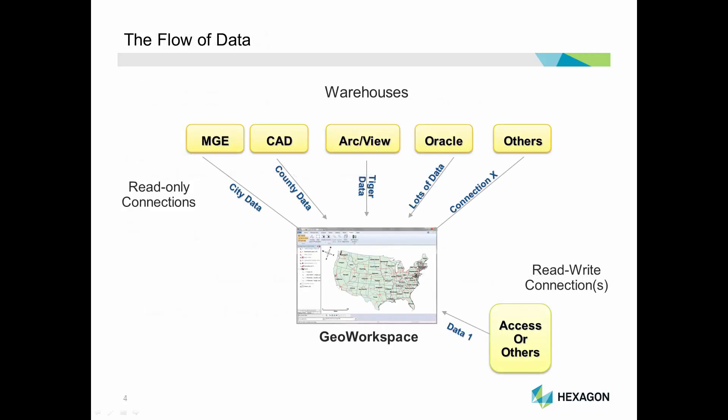Here we see how these items fit together. In the middle, we have a GeoWorkspace. Along the top, there are a number of different read-only warehouses containing data, and at the bottom is a read-write warehouse. Each warehouse has a named connection supplying data to the GeoWorkspace from the warehouse.